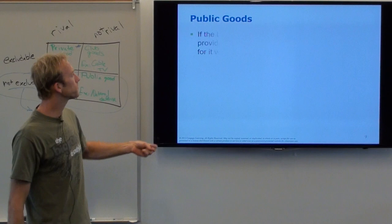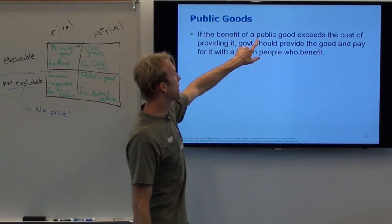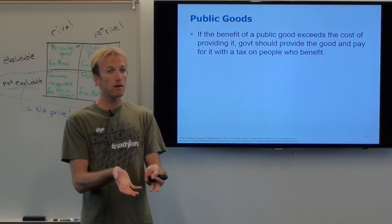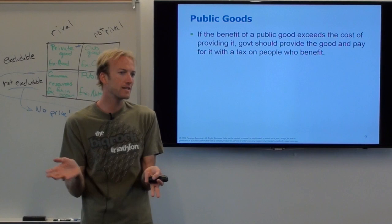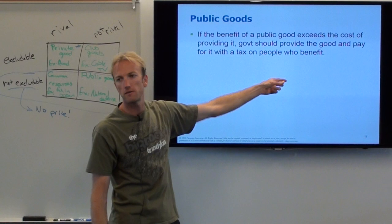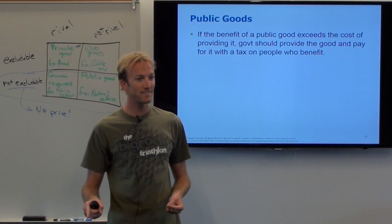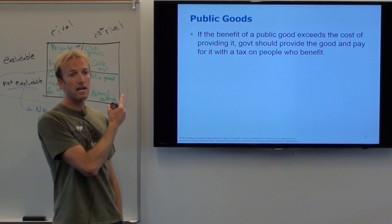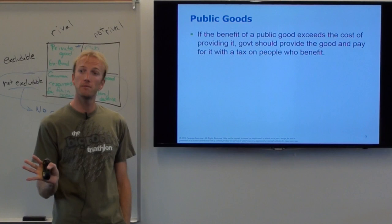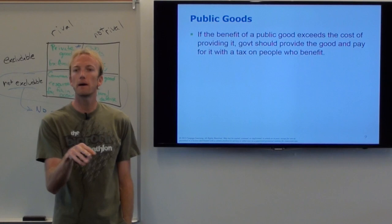If the benefit of a public good exceeds the cost of providing it, we want it to happen. If people value the park more than it costs to make one, we want there to be a park — except no private firm will build it because they can't charge a price. So the government should step in, provide the good, and pay for it through taxes. The government is the only entity that can force people to pay for something through taxation.